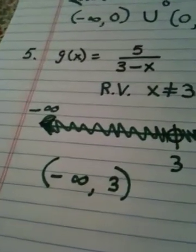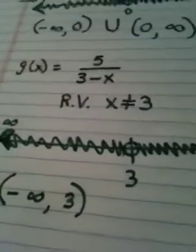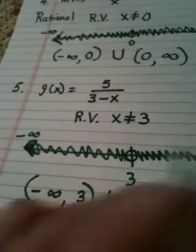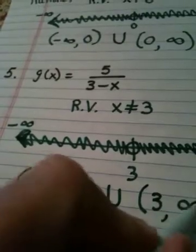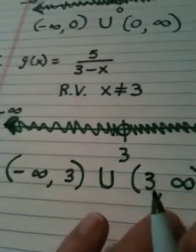So, it would be numbers like 2.999999, you get my drift? And then I put a union because there's another piece. And now I pick up all the numbers to the other side of three. And that would be from three to infinity. This is my answer for domain. Negative infinity to three, union three to infinity.